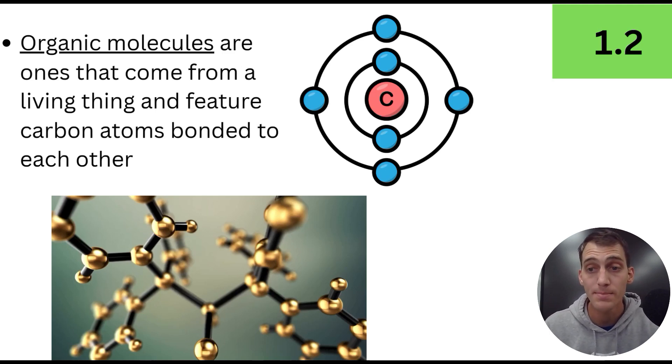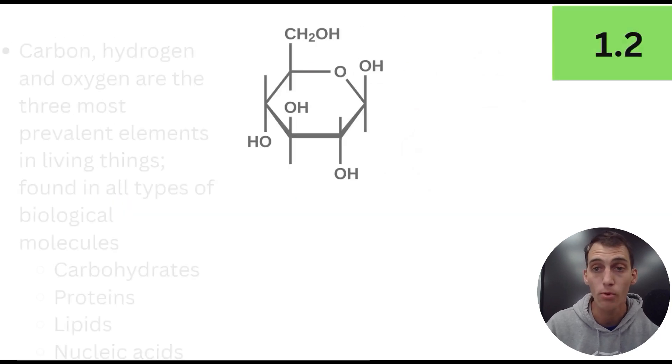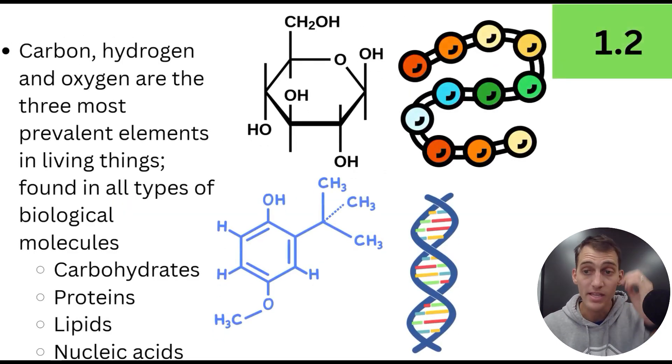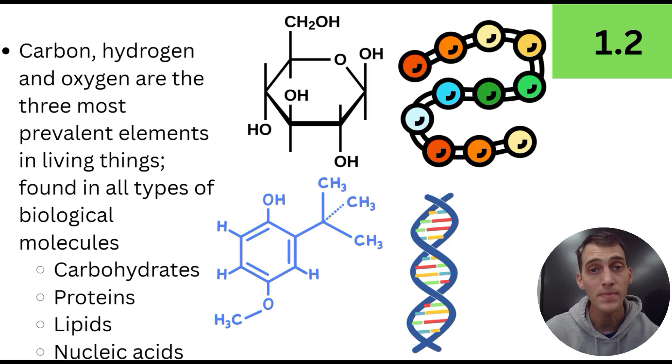So all the types of molecules that we're going to be talking about here, our macromolecules, biological macromolecules, all feature carbon atoms bonded to one another and are important parts of living things. And here are the three elements that you're going to find in all of them. Carbon being the most important because it serves as the backbone elements of all of them. But carbon, hydrogen, and oxygen are the three most prevalent elements in living things. They are found in all types of biological molecules. You can find these molecules in every single living thing that's ever existed ever.